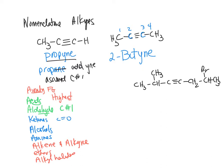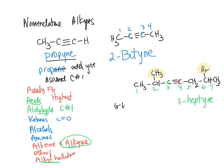Do we number this one, two, three, four to reach the halide? Or one, two, three to reach the alkyne? Alkynes rank higher than alkyl halides, so we number the longest chain: one, two, three, four, five, six, seven — so it's heptane. The triple bond is on three, giving us 3-heptyne. We have a methyl on carbon two and a bromo on carbon six: 6-bromo-2-methyl-3-heptyne.